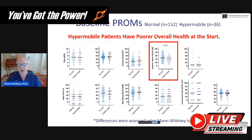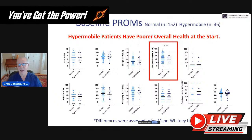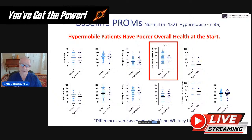Looking at the baseline numbers, the hypermobile patients had a general trend towards poorer health. That makes sense because hypermobile patients have other issues beyond just their neck problem — it would make sense that they would probably be less active and more depressed about it, because they don't just have a neck problem; they've got other problems in other areas as well.